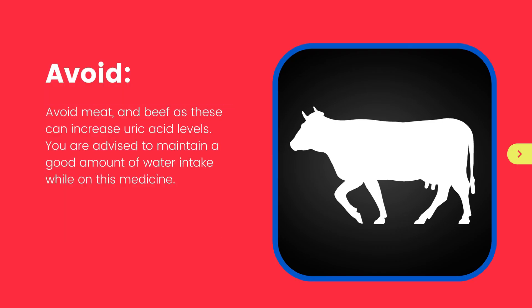What foods should be avoided while taking this medicine? Avoid meat and beef as these can increase uric acid levels. You are advised to maintain a good amount of water intake while on this medicine.